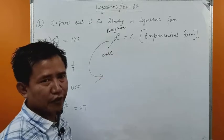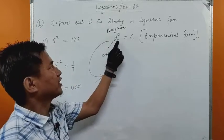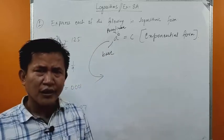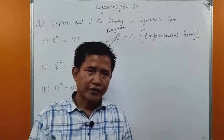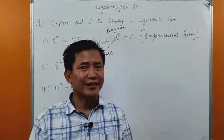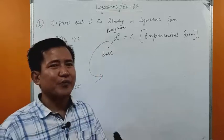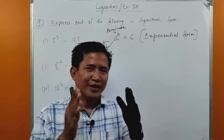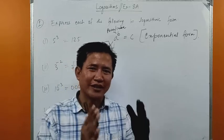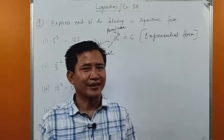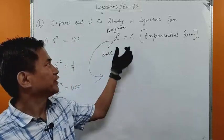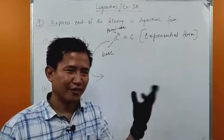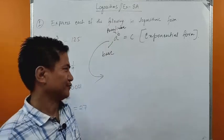We can convert this exponential form to logarithmic form as well. The reason we convert exponential form to logarithmic form is just to make calculations easier and simpler. Logarithm, or 'log' in short form, helps us calculate numbers faster and in an easier way.